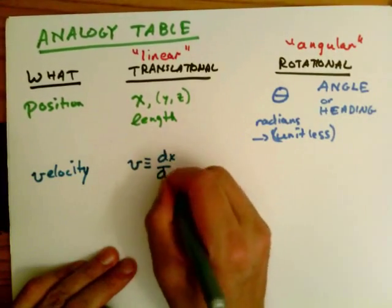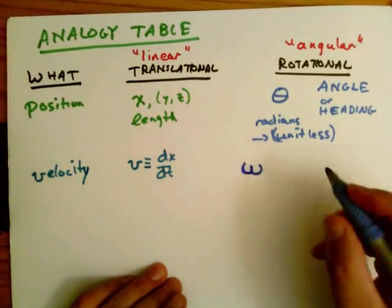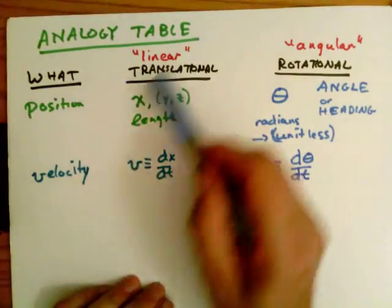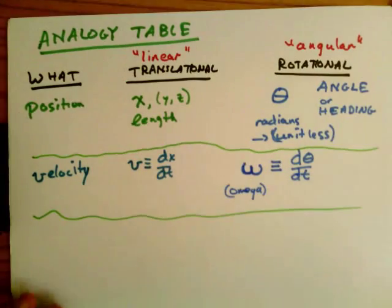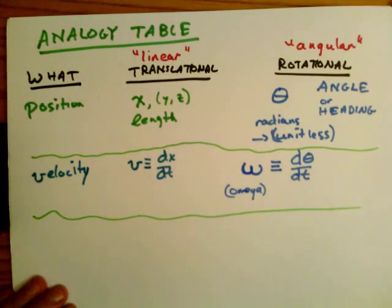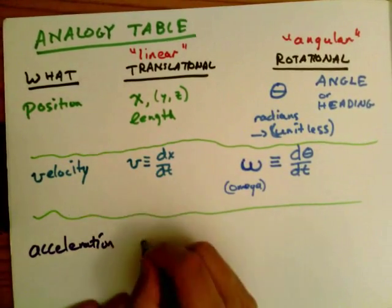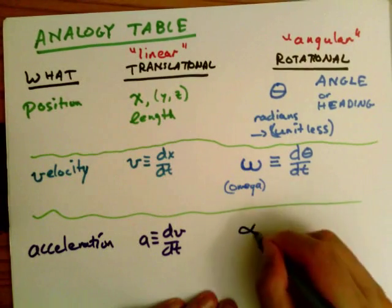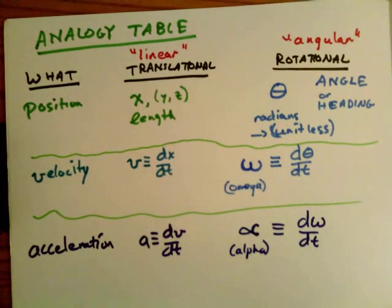Now velocity is the time derivative of position. In the same way, I can define the angular velocity — the rotational velocity — omega, which equals the time derivative of the angle: dθ/dt = ω. That's the angular or rotational velocity omega. By analogy, the acceleration is the time derivative of velocity, and in rotational form that's alpha — the Greek letter alpha — defined as dω/dt, the time derivative of the angular velocity.